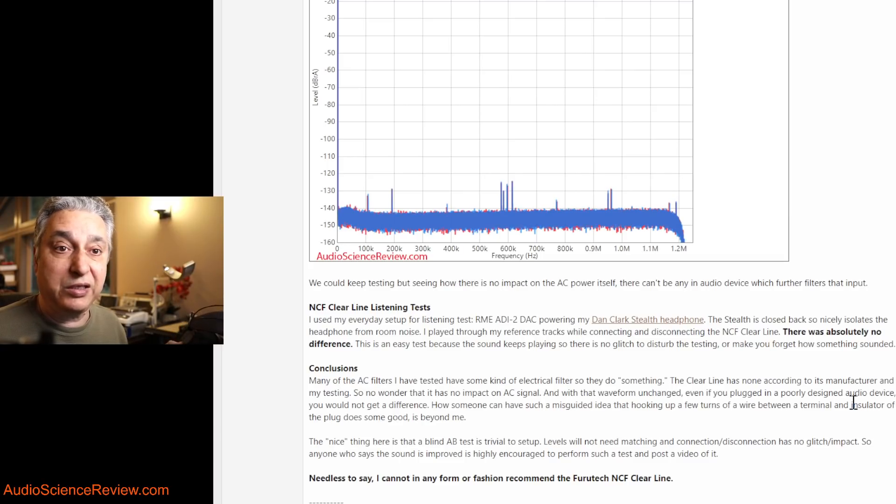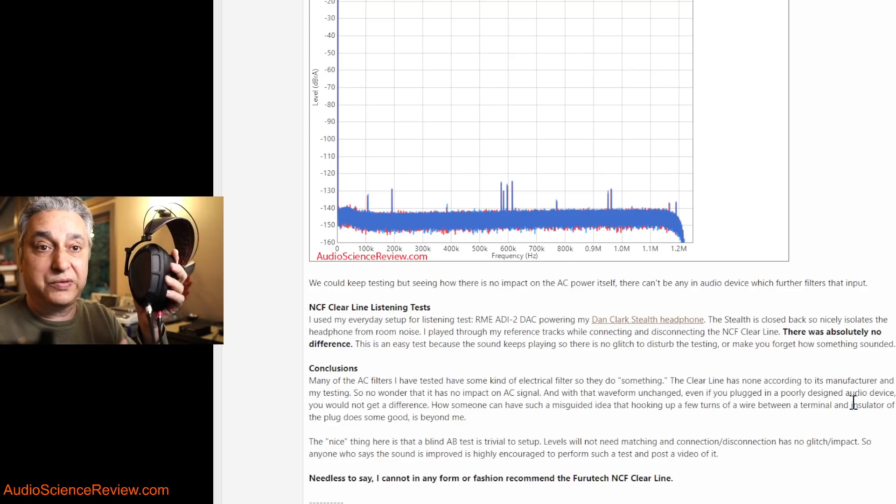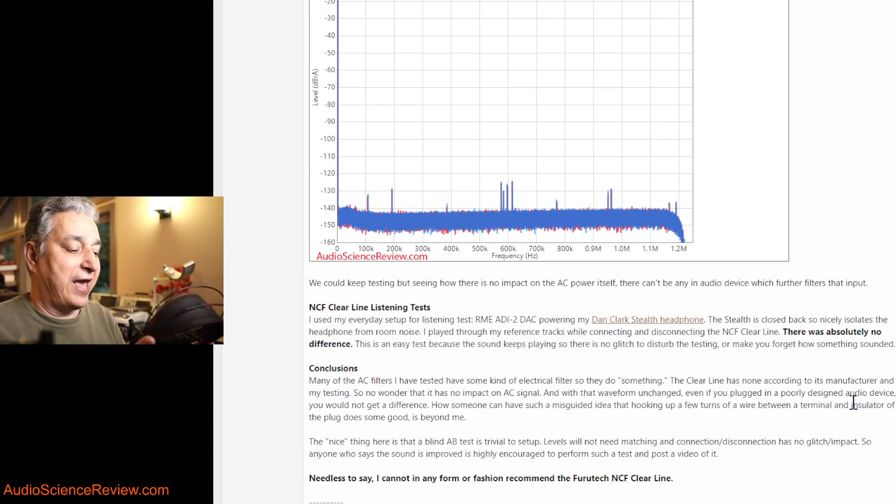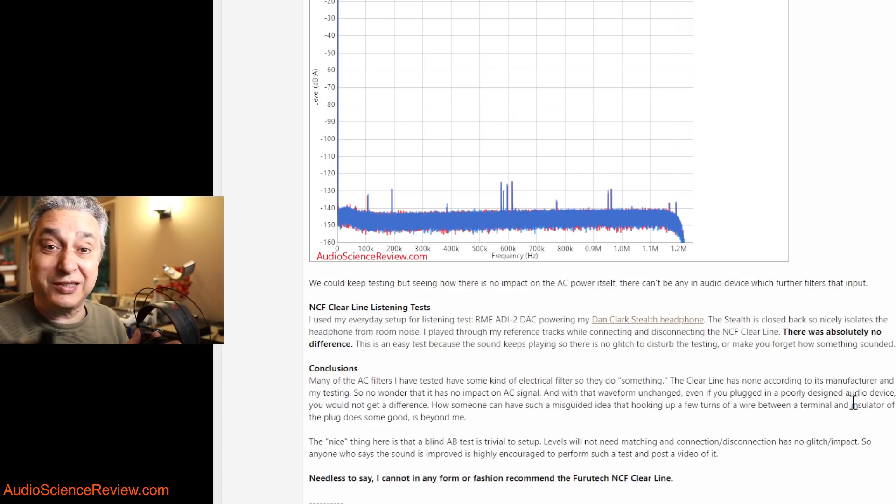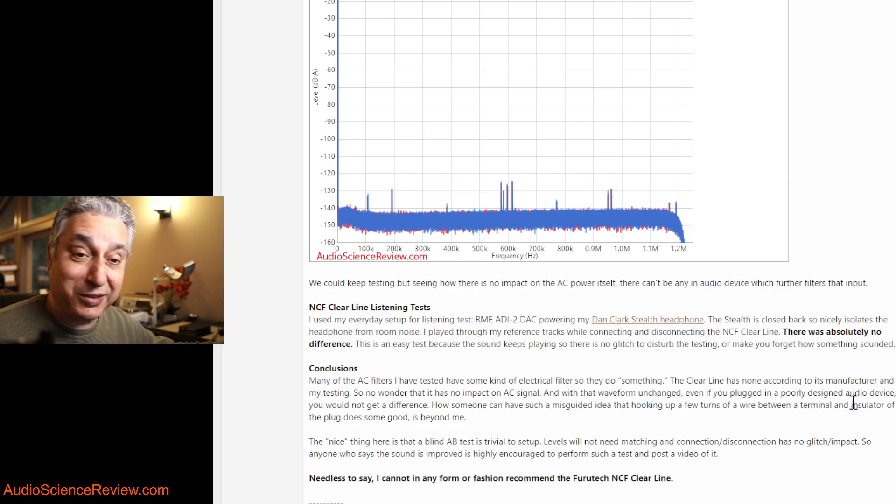For this testing, I use my RME DAC, which is a $1,000 high performance DAC, my everyday DAC on my desk. And these are my Dan Clark Stealth headphones. They're the world's lowest distortion headphones that I've ever measured, and they're sealed. That means it isolates the noise. My room's pretty quiet anyway, but with this being closed in, it blocks all the noise. It's a $4,000 headphone.